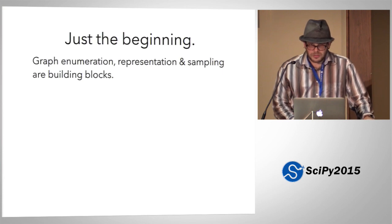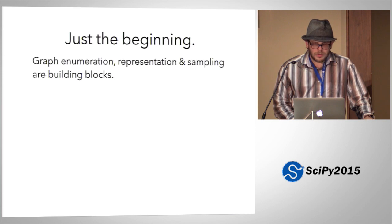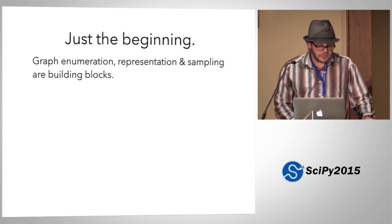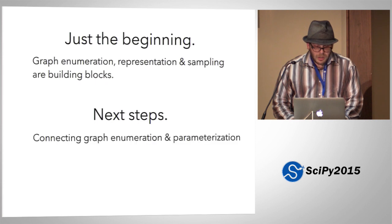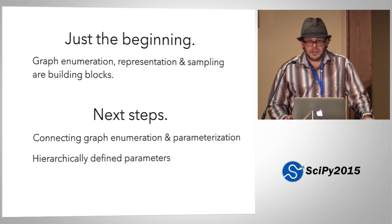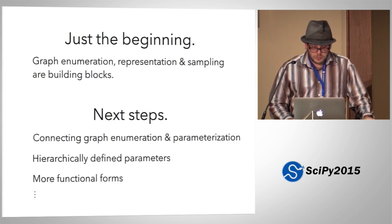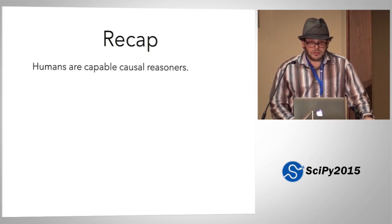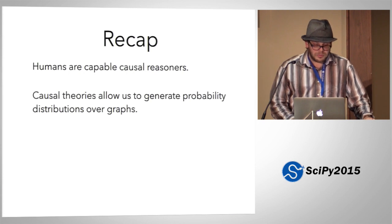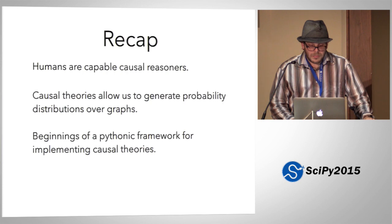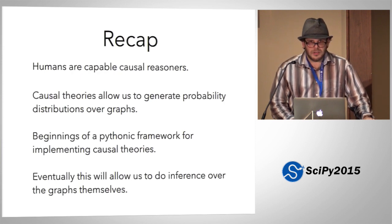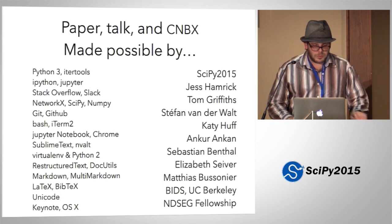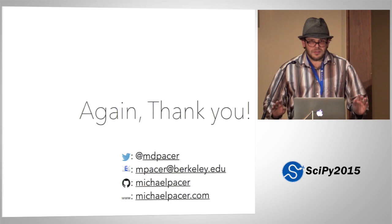So this is just the beginning. The causal theories are not fully implemented — there are more advanced pieces I have working, but only in test cases. The graph enumeration, the representation, and the sampling are the building blocks on which everything else needs to grow. The next steps are: connecting graph enumeration and parameterization, defining parameters hierarchically, and having more functional forms than just discrete choice. To recap: humans are extremely capable causal reasoners, causal theories are good models of that, they allow us to generate probability distributions over graphs, and this is the beginnings of a Pythonic framework for implementing causal theories that will eventually allow inference over graphs themselves. Thank you all for listening.